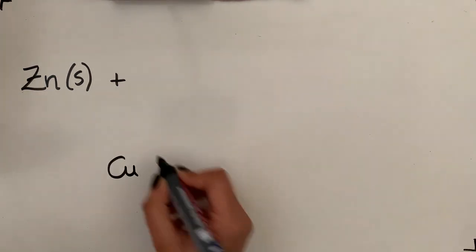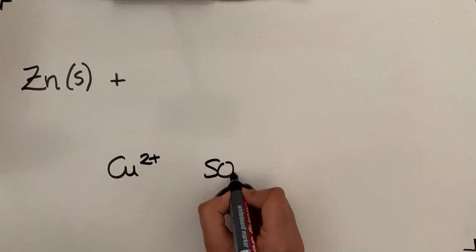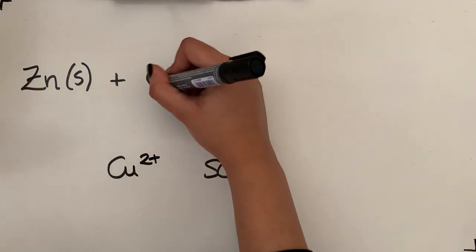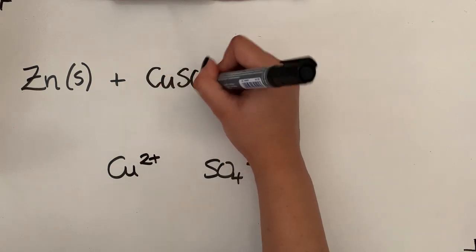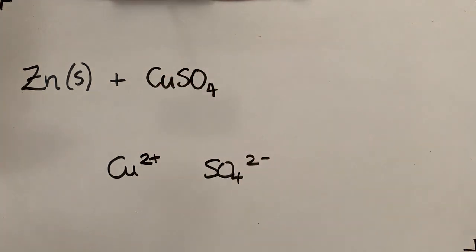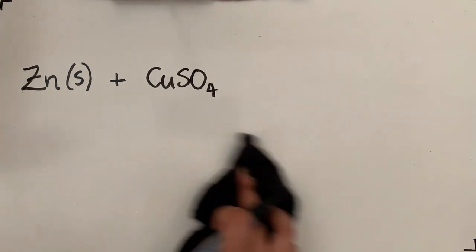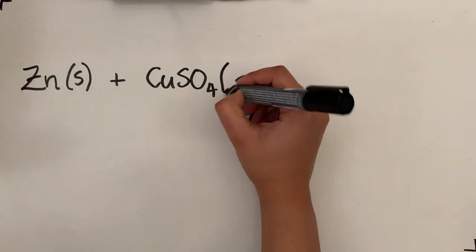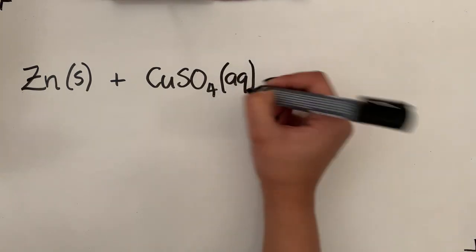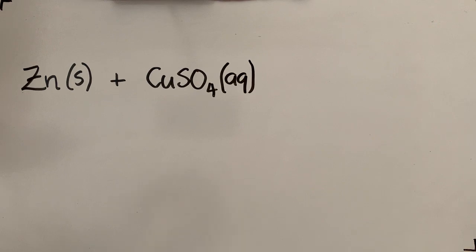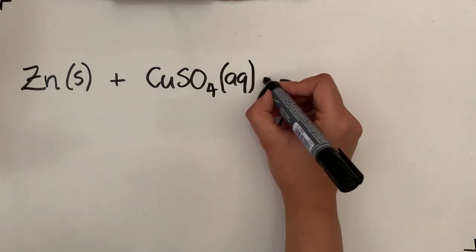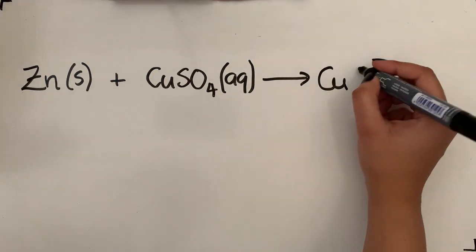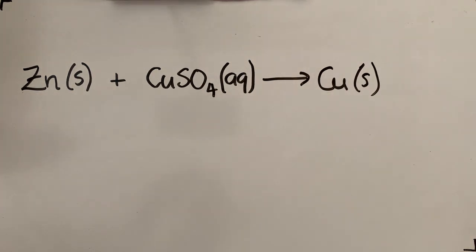Copper(II) means it's got a 2+ charge. Sulfate is SO4 2-, and therefore the formula for copper sulfate is CuSO4. They've told you it's a solution, so the state symbol is aqueous. This then produces solid copper metal, so solid copper metal, it's solid, so obviously solid state symbol.